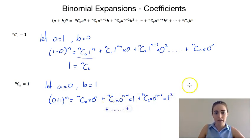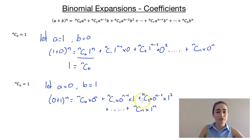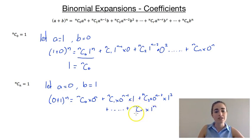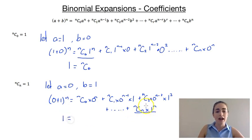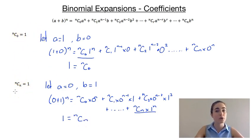That's going to go all the way up until we get to our final term, which is going to be ncn times 1 to the power of n. Now this time, every term except for this very last one is going to contain a 0, so we're just going to have this final term. So the left-hand side simplifies to 1, and this final term simplifies to ncn. So that's proved that our first and our last coefficients are both 1.